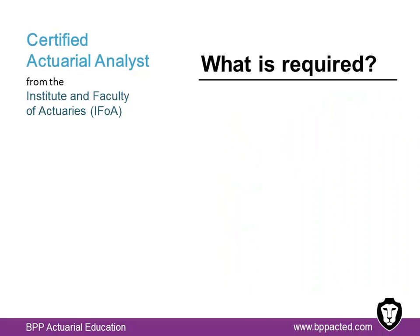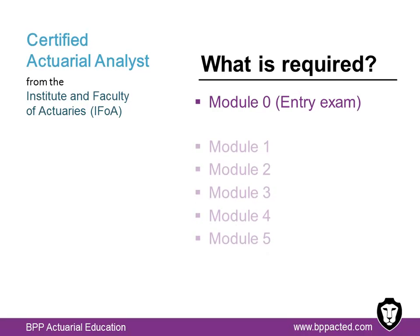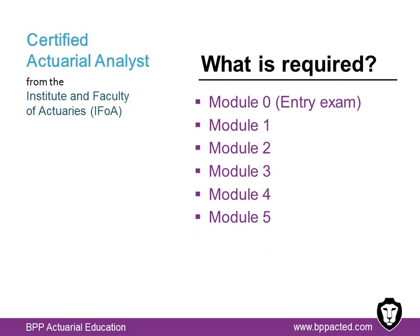To qualify as a Certified Actuarial Analyst, you'll require taking seven exams: Module 0, the entry exam; Modules 1 to 5, covering the core knowledge you need to understand the office work you'll undertake; an online professional awareness test, OPAT for short, covering the Actuaries Code; and finally, students will need a minimum of one year of relevant work experience supported by a completed learning log. Should you wish to skip to one particular exam, please use the links on screen.